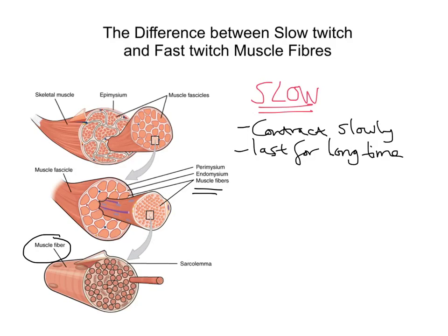Slow twitch fibres contract slowly and so can work for a long time without getting tired. These are the ones that contract slowly and last for a long time. That makes them good for endurance activities like long distance running and maintaining posture. We actually have high proportions of slow twitch muscle fibres in muscles used for posture, like those in the back and calves.